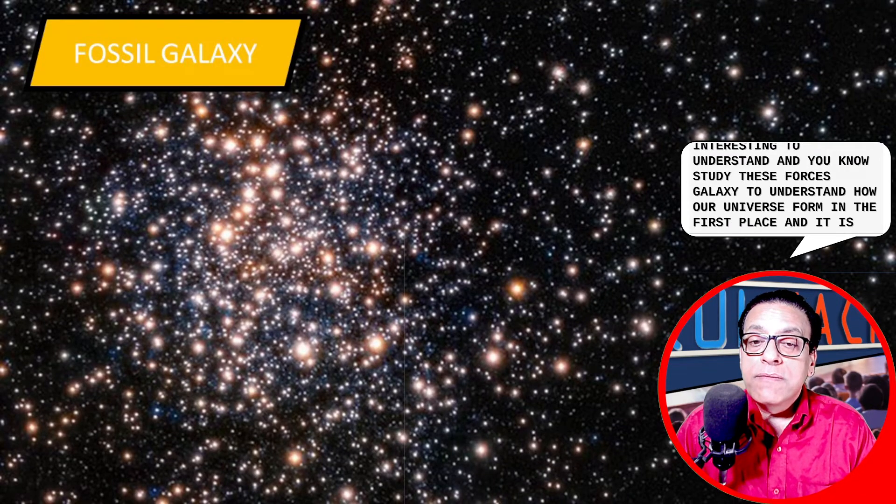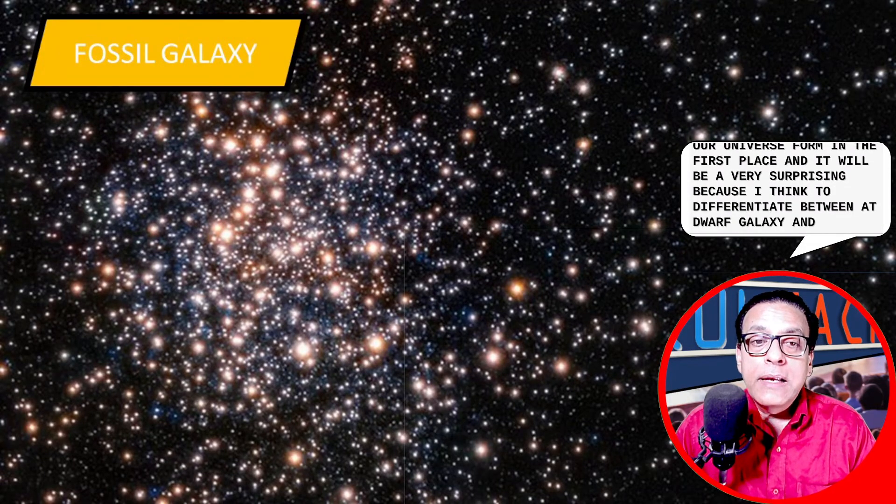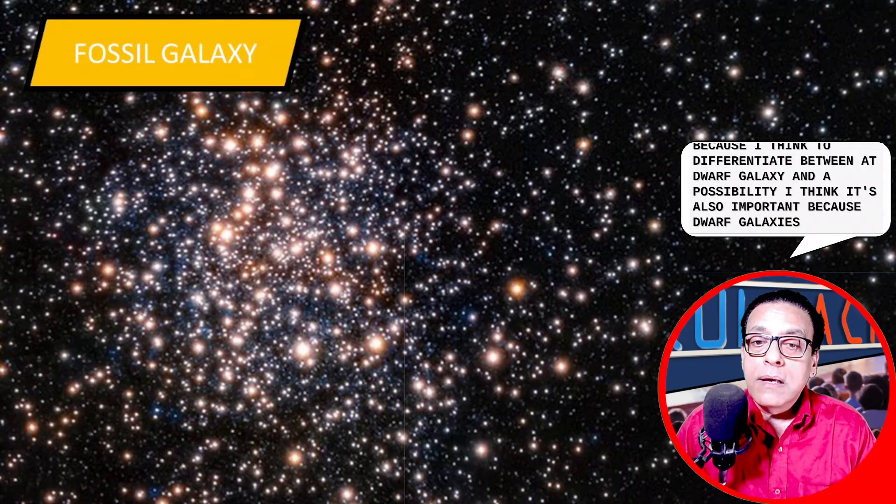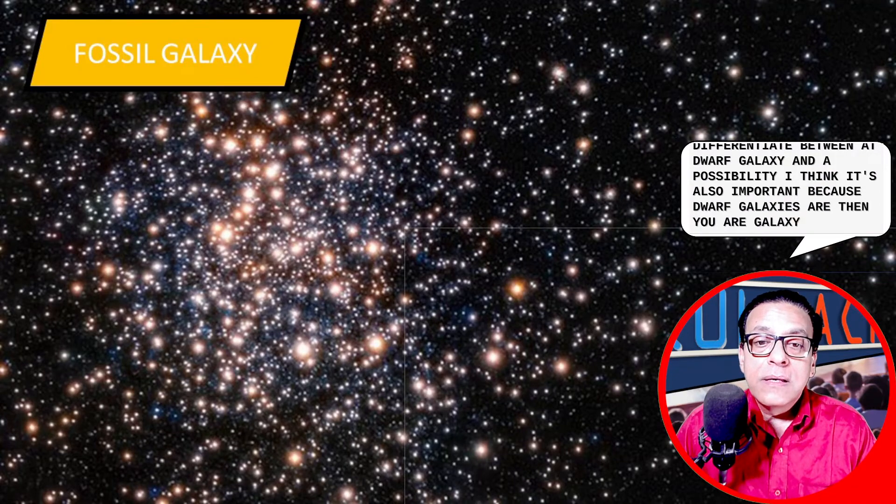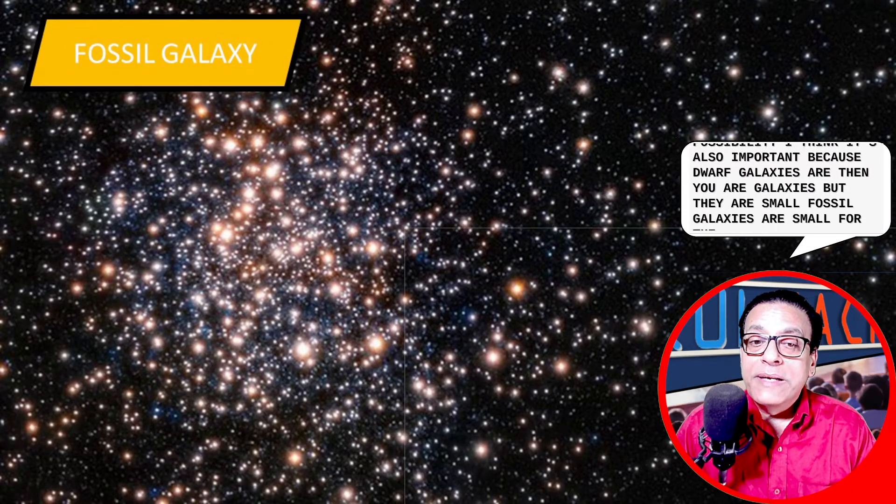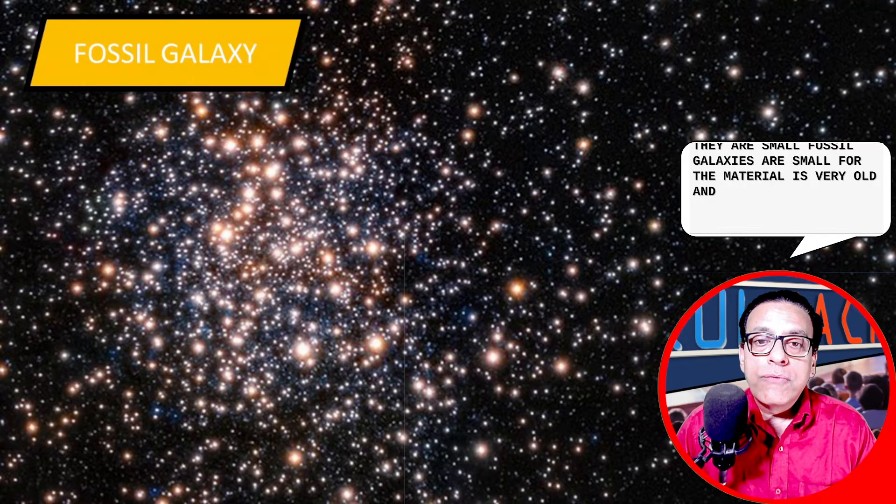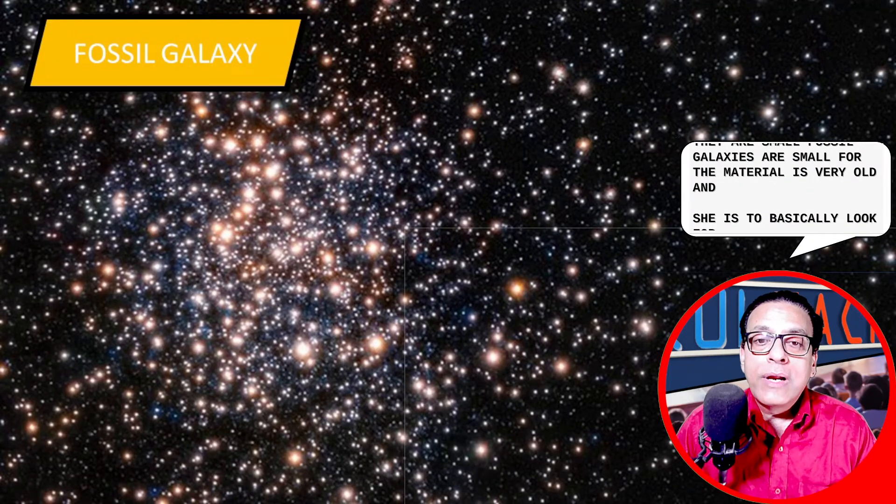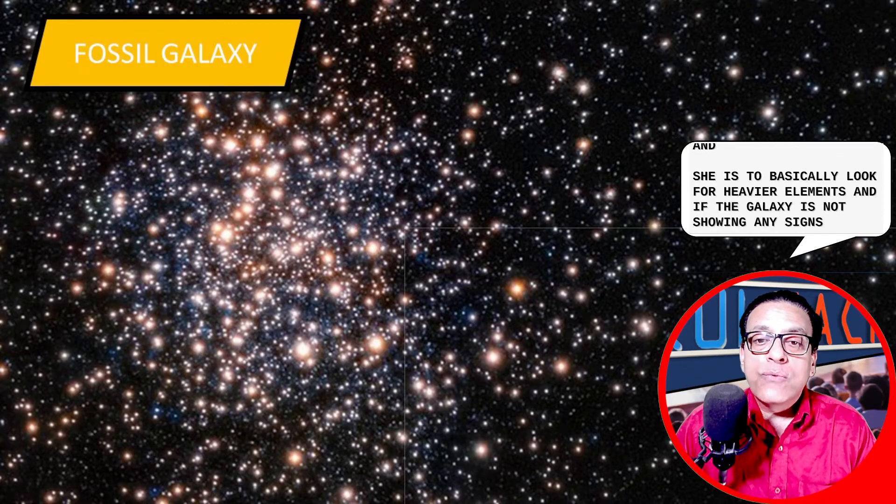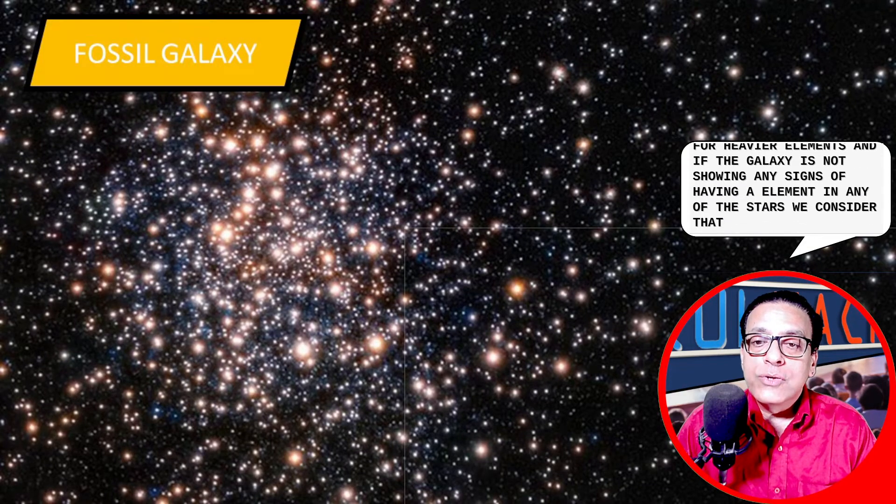And it will be a very surprising part because to differentiate between a dwarf galaxy and a fossil galaxy is also important, because dwarf galaxies are the newer galaxies but they are small. Fossil galaxies are small, but the material is very old. And one way to identify a fossil galaxy from a dwarf galaxy is to basically look for heavier elements. And if the galaxy is not showing any signs of heavier element in any of the stars, we consider that as a fossil galaxy.